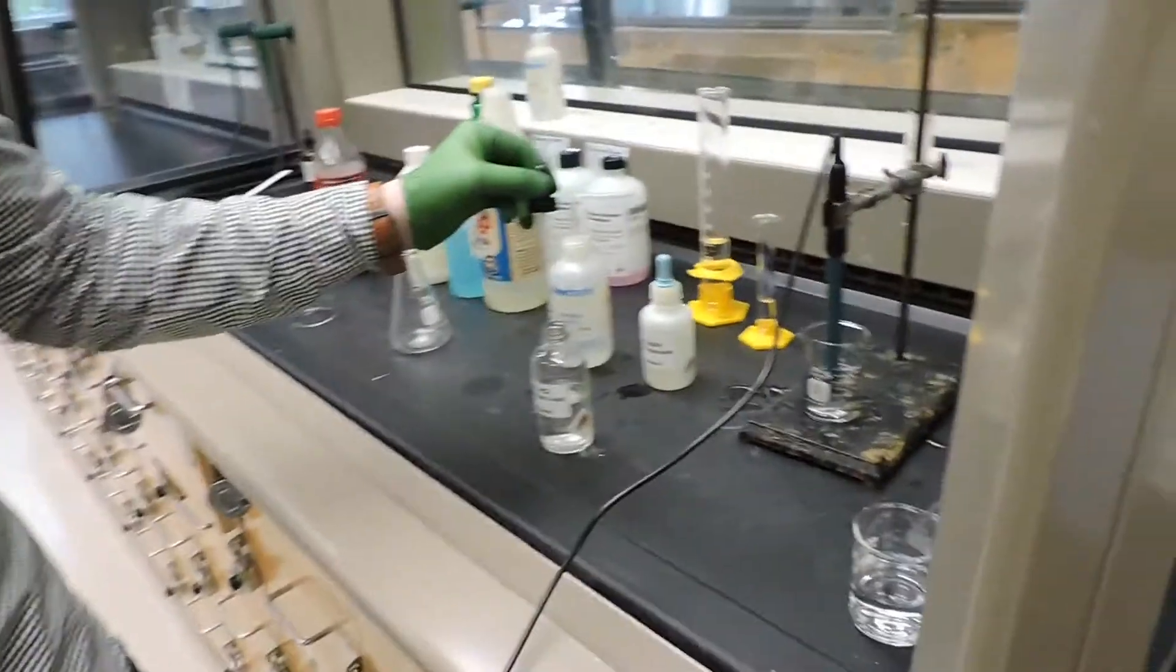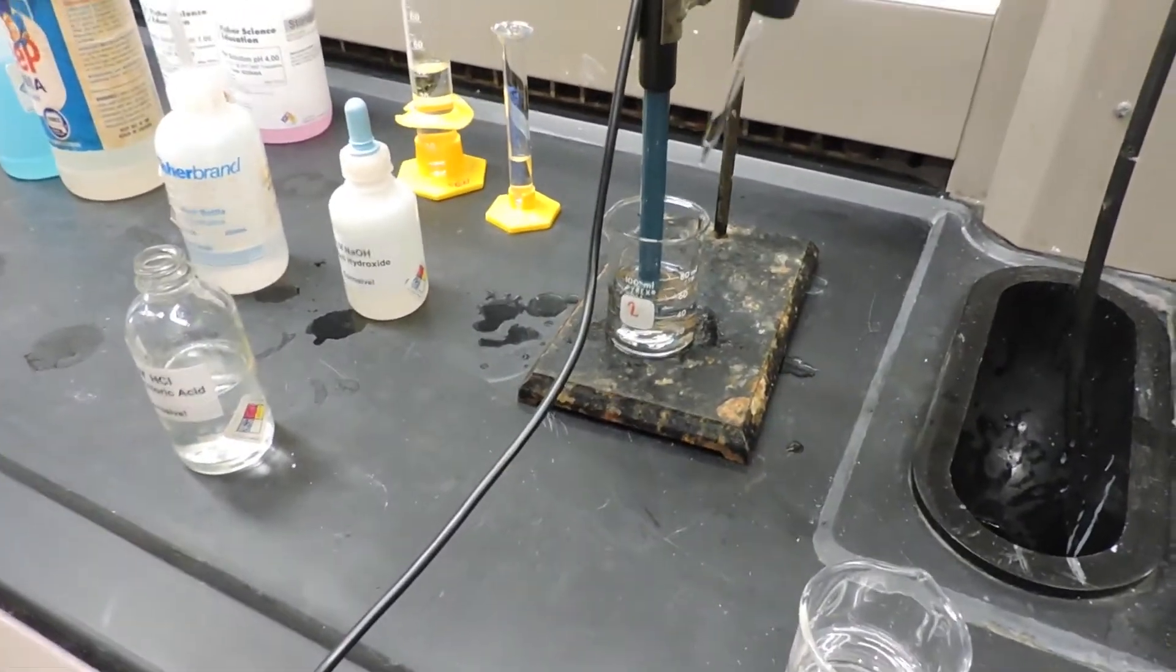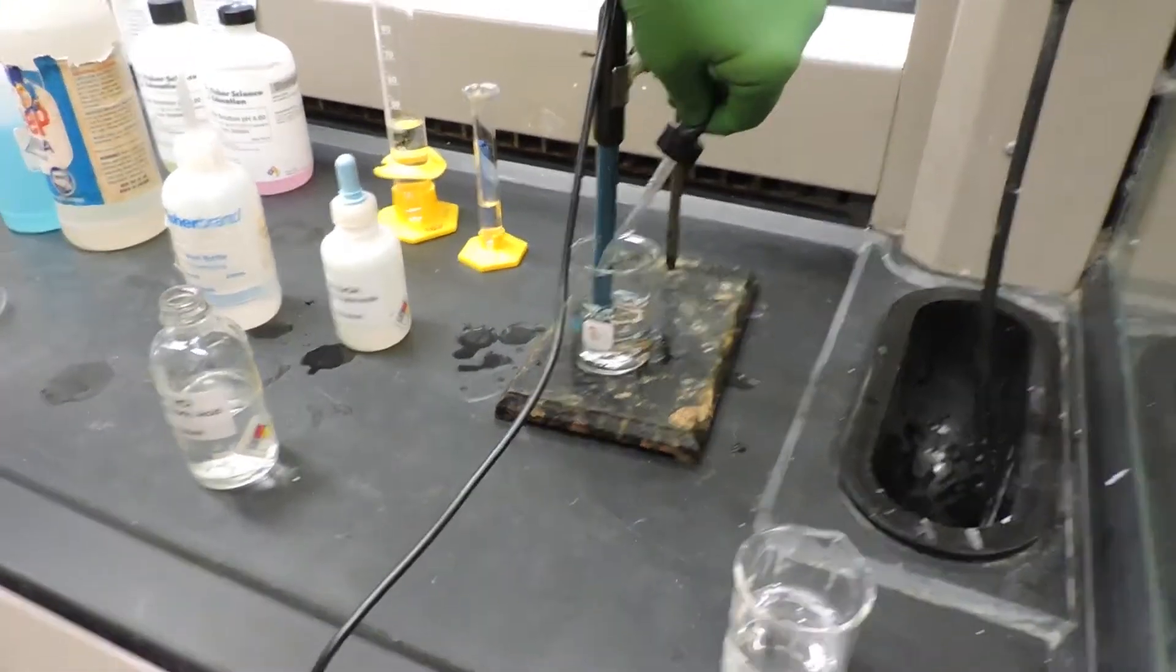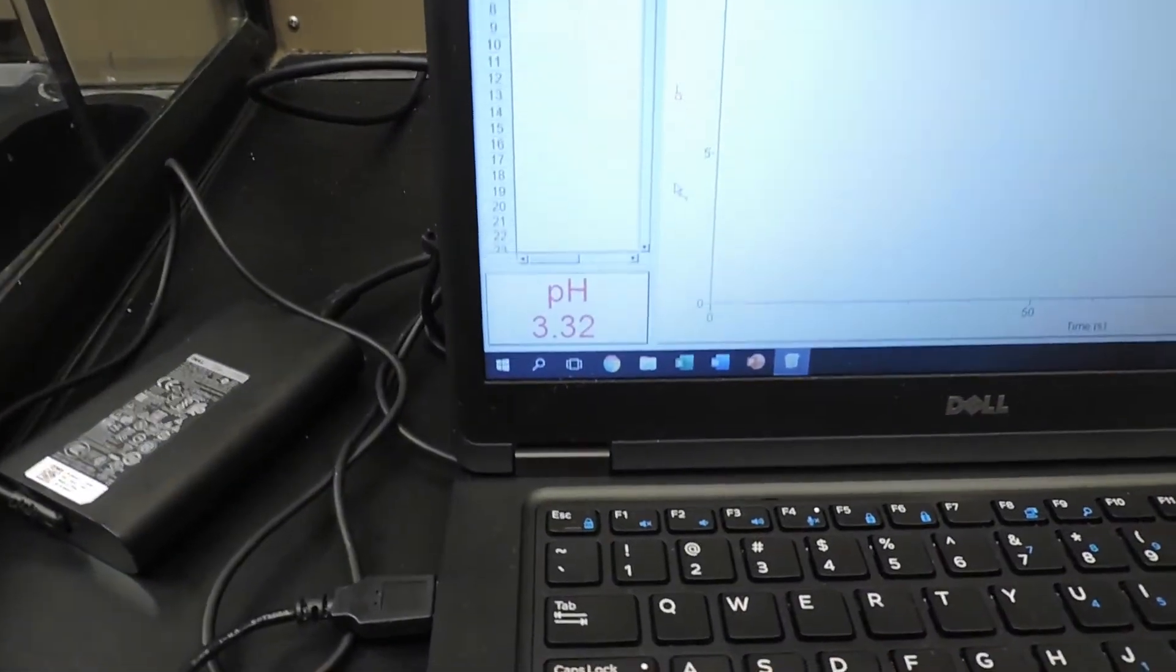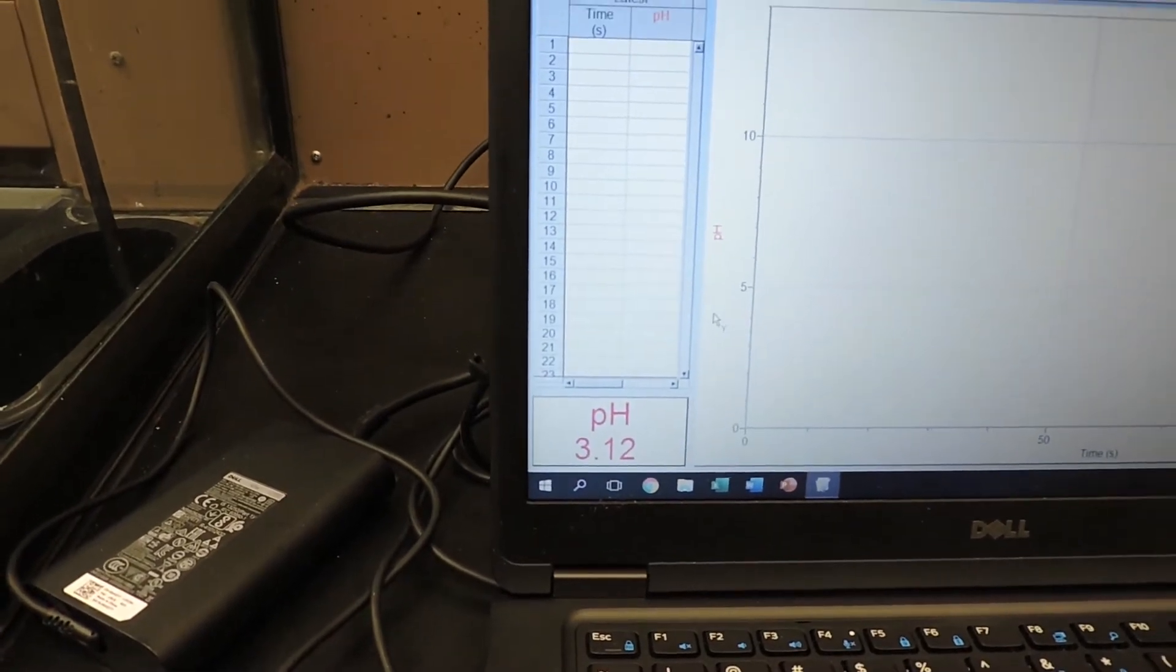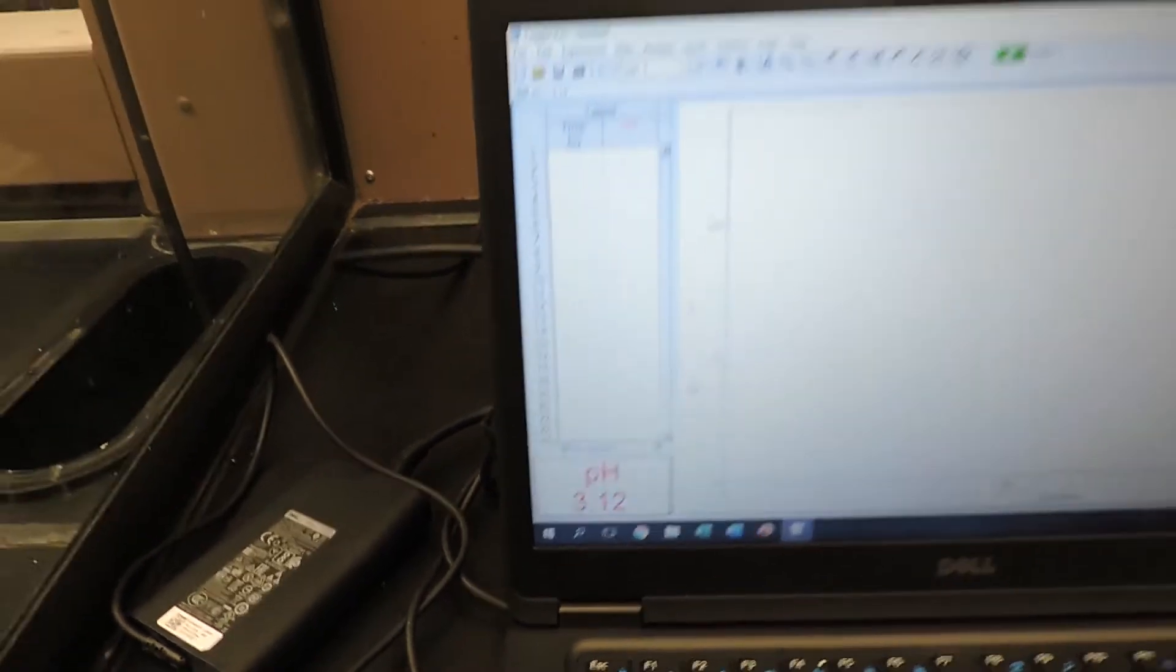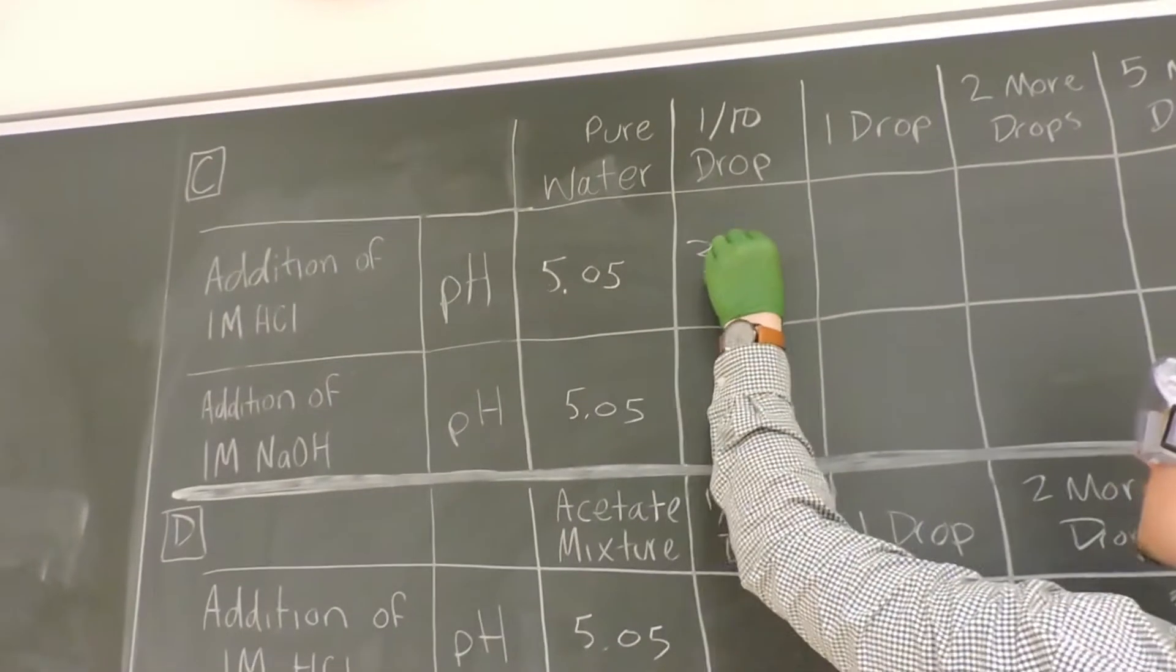For our one tenth of a drop, Jared's going to try his best. And then we can stir using the electrode to stir the solution. You can see the pH is already starting to go down.